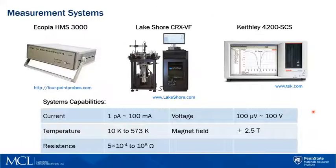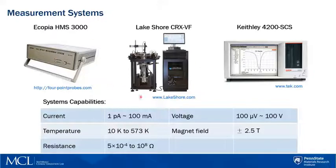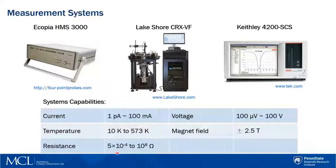In ESAIL, we have three systems capable of performing Van Der Pauw measurement. They are the Ecopia HMS 3000, the Lakeshore System, and the Keithley 4200 SCS. Here are the system capabilities, including current range, voltage range, temperature range, magnetic field range, and measurable resistance range.